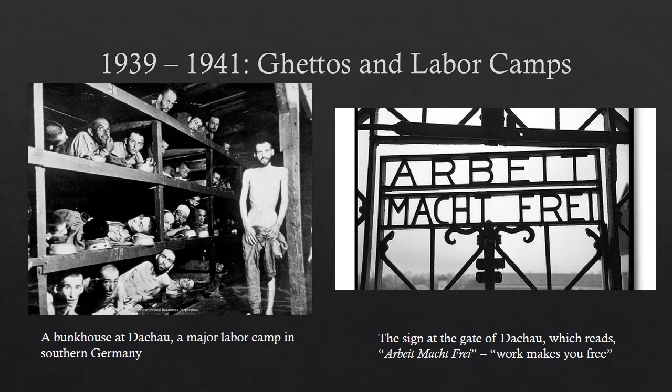Here are images from the second stage of the Holocaust, when Jewish people were forced into ghettos and many were sent to labor camps. On the left is a bunkhouse at the concentration camp of Dachau in southern Germany, where prisoners were stacked on top of each other. Dachau was one of the major labor camps operating for most of Hitler's time in power. Prisoners were fed starvation rations and disease spread rapidly. On the right is the sign at Dachau's gate reading 'Arbeit macht frei' — 'work makes you free' — a sick lie, since working hard only meant starving and dying more quickly.